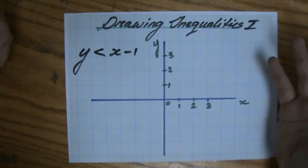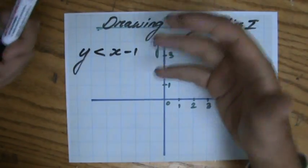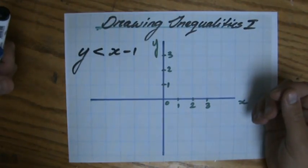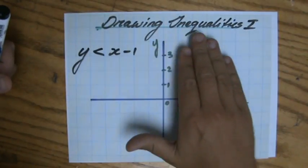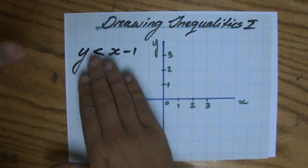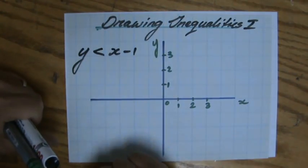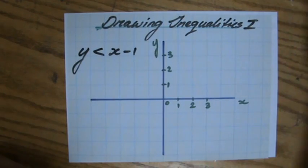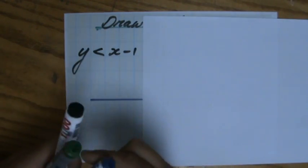You'll find resources about lines and an equation — y equals something, y equals x minus 1, for instance. But now we're going to draw an inequality, so y is smaller than x minus 1. I'm going to show you in this video and in the next video that that is actually almost the same as drawing an equation.